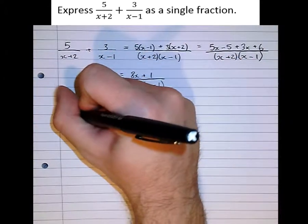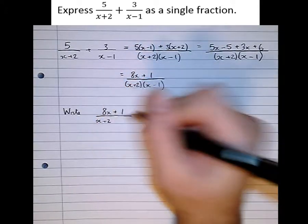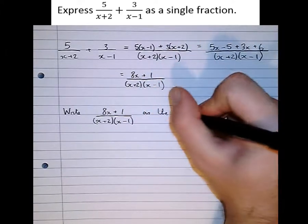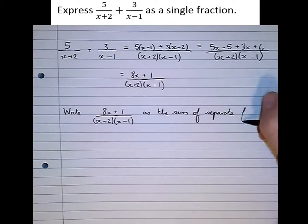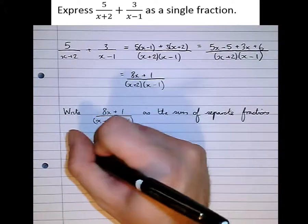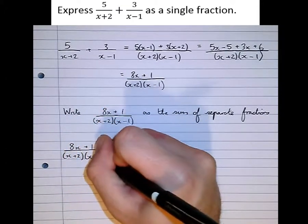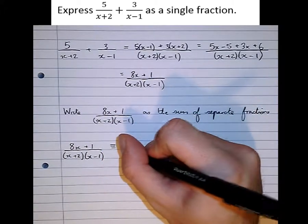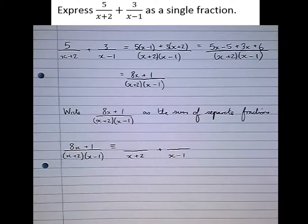Suppose the question was: write 8x + 1 over (x + 2)(x − 1) as the sum of separate fractions. Well, we can see from the factorized denominator that there are two separate factors, so we're going to write this as separate fractions. The first denominator will be (x + 2) and the second will be (x − 1), but we don't know what number goes on top yet.